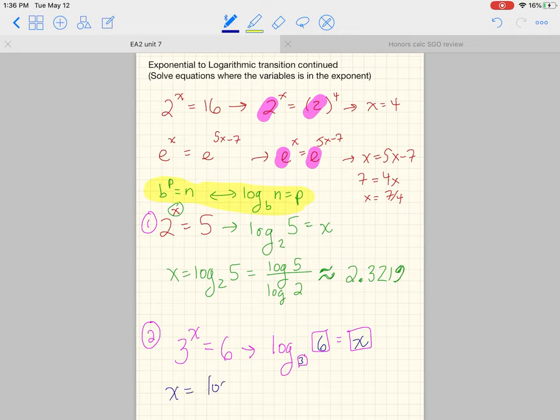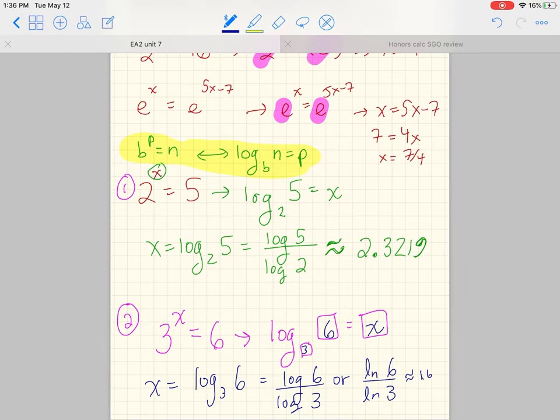And so if x is log base 3 of 6, in your calculator you're going to have to press log of 6 over log of 3 if you don't have the special button. Or you can actually do the natural log of 6 over the natural log of 3, which some people like to write because it's shorter. So you can do the ln of 6 divided by the ln of 3 and get the same exact answer if you did the log base 10 of 6 over the log base 10 of 3. And that approximates to 1.6309.